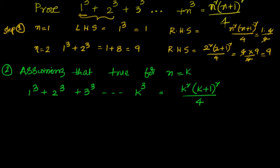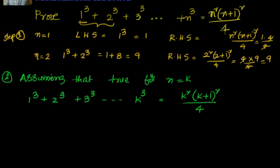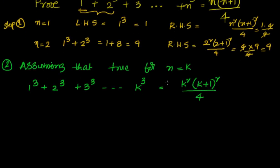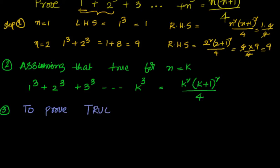In Step 1 we proved it's true for a specific value, generally n=1. In Step 2 we assume it's true for n=k. Now in Step 3 we have to prove that the statement is true for n=k+1.